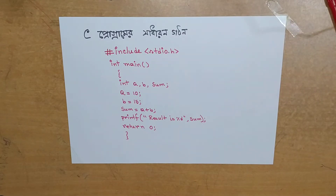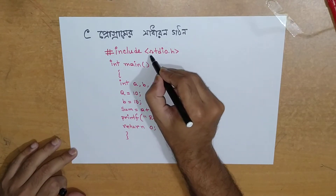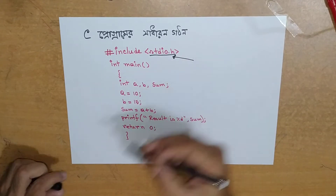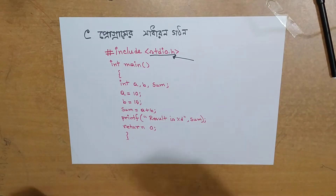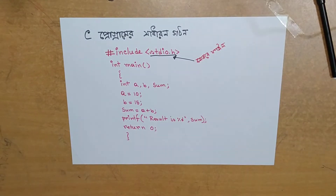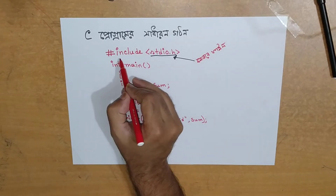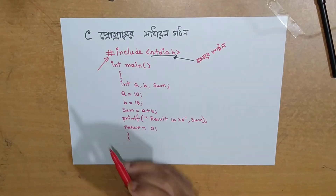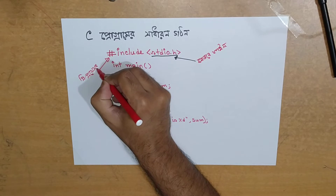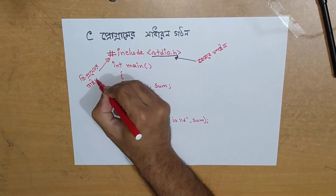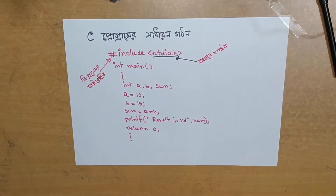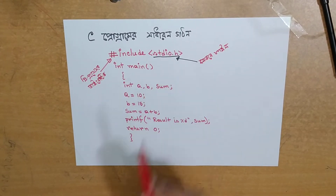I am going to check out the code in the studio. The .h extension refers to a header file. I am going to start this program. The hash include directive is called a Pre-Processor Directive. Hash include is a Pre-Processor Directive, and stdio.h is the header file.